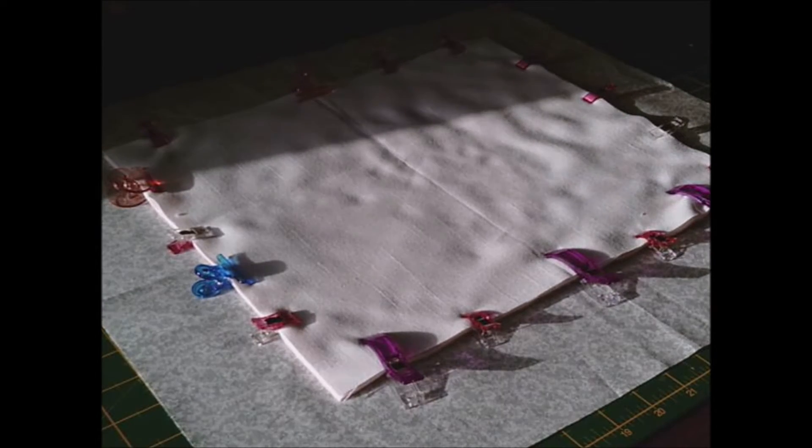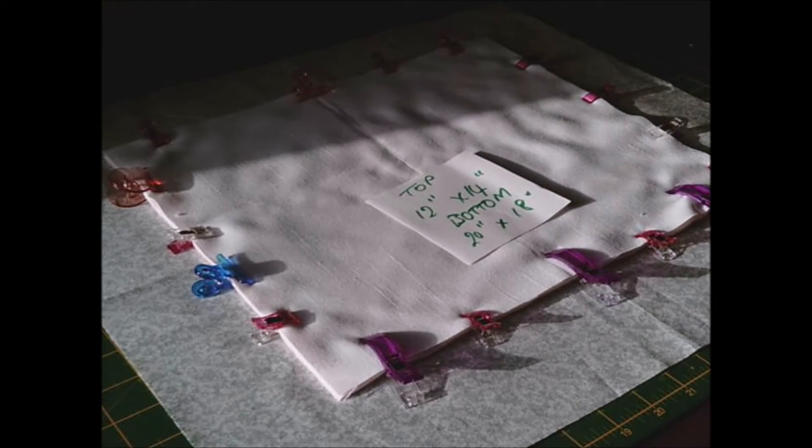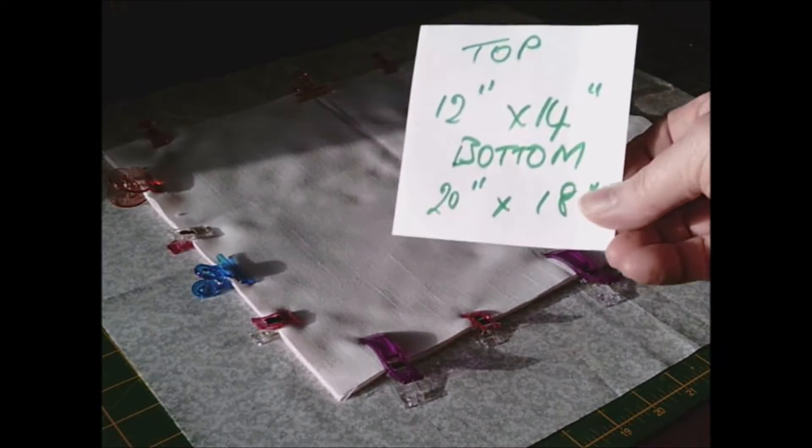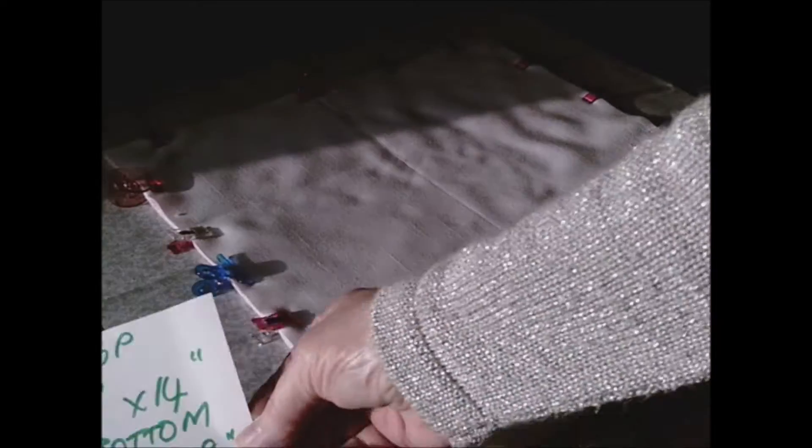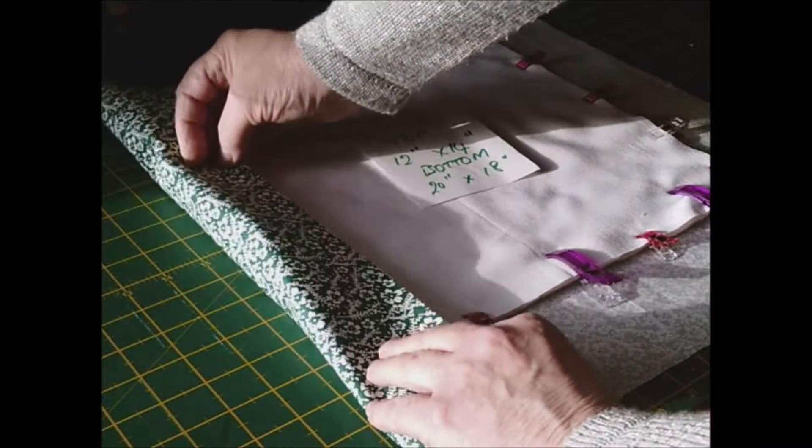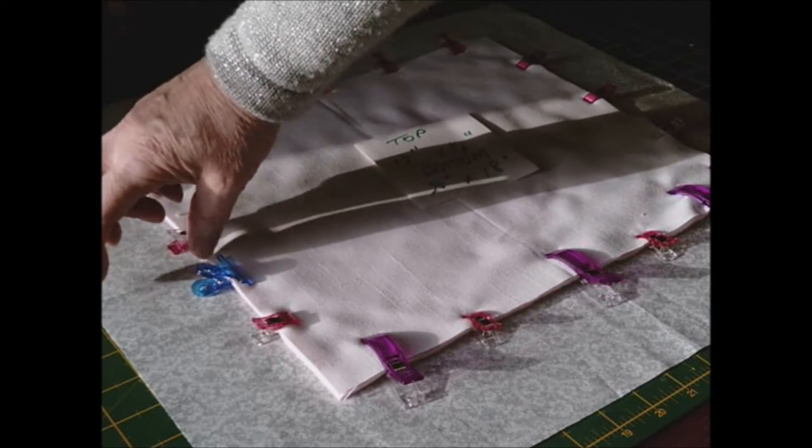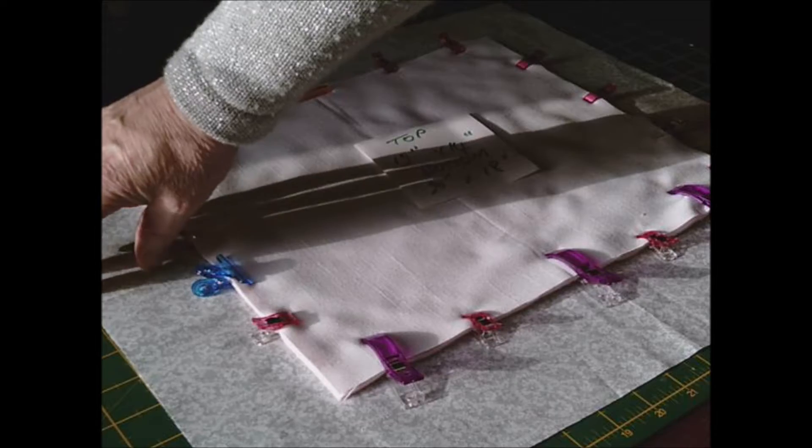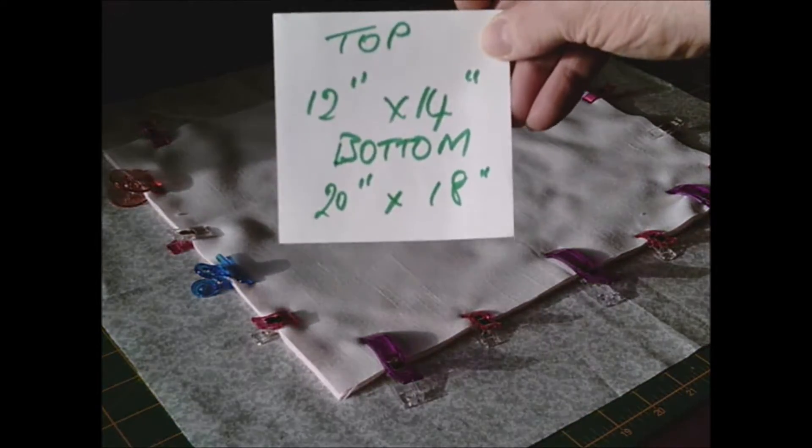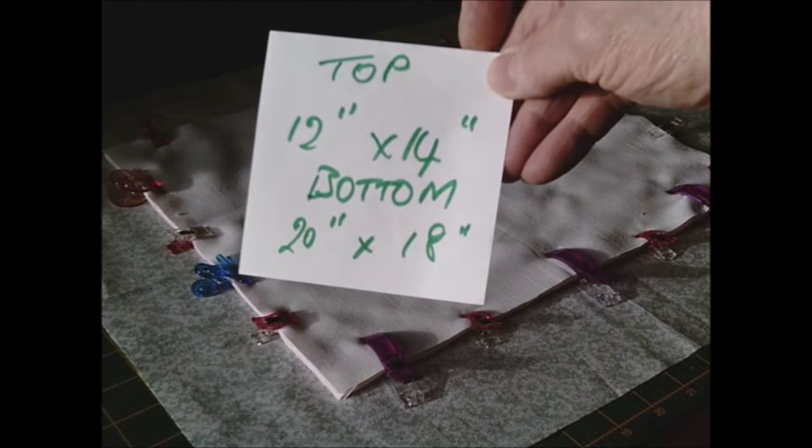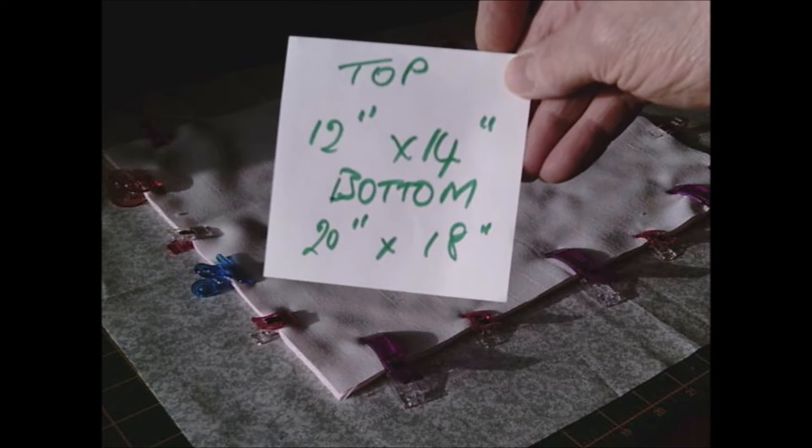The measurements are: the top is 12 by 14 inches, so my white linen is 12 by 14 inches. My bottom, because I want this to come round to the front - I measured how much I want to overlap, which is inch and a half, so double that because you have to fold it in on itself. I measure that as 20 by 18 inches.